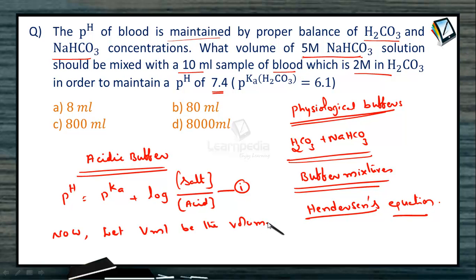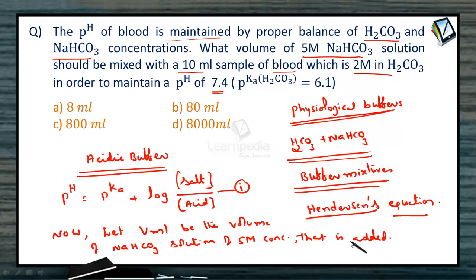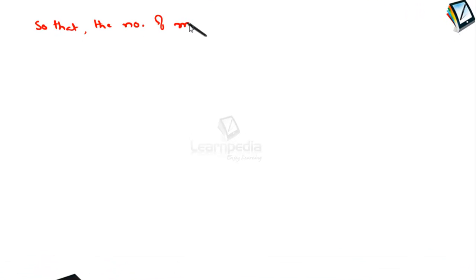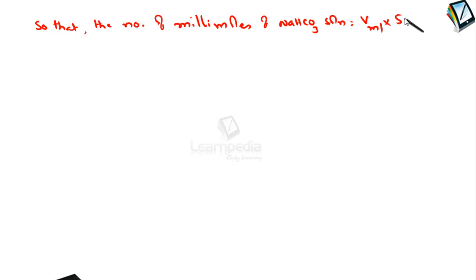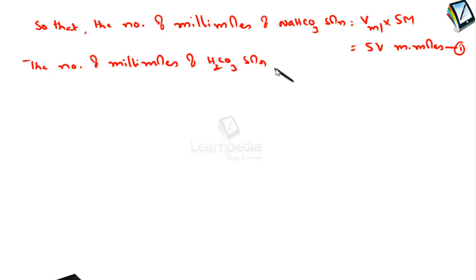Let V mL be the volume of 5 molar sodium bicarbonate solution being added. The number of millimoles of sodium bicarbonate = volume × molarity = V × 5 = 5V millimoles. The number of millimoles of carbonic acid = 10 ml × 2 molar = 20 millimoles.